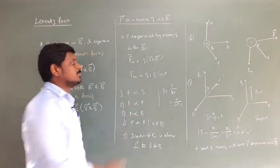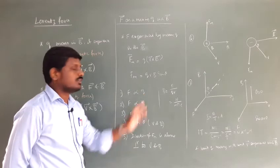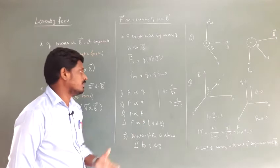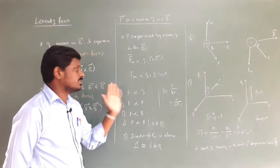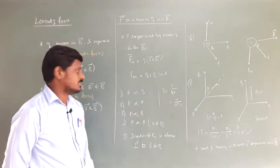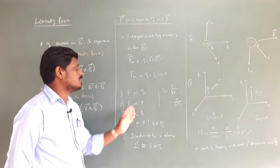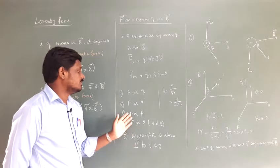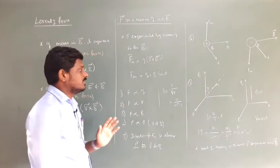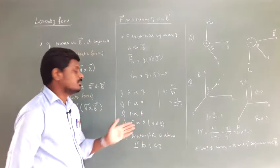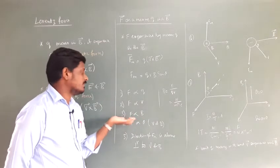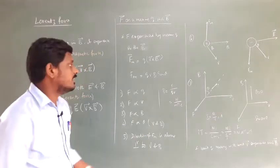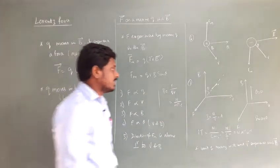The magnetic force is directly proportional to the magnitude of the charge — whether it is one coulomb, five coulomb, or ten coulomb. The magnetic force is also directly proportional to the velocity of the particle, directly proportional to the magnitude of the magnetic field, and finally directly proportional to sinθ, where θ is the angle between the velocity and the magnetic field.